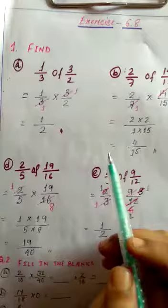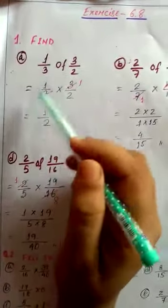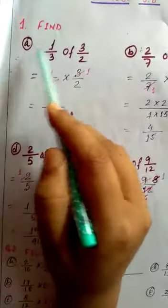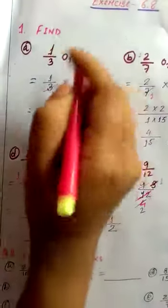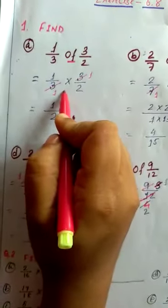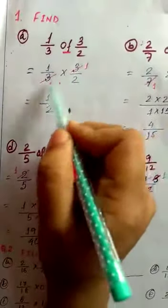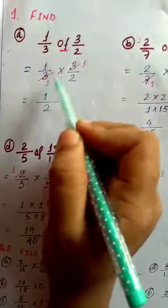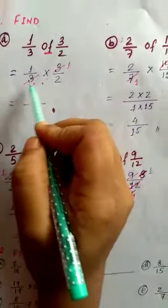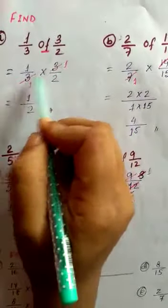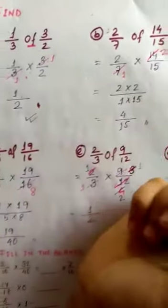Now let's do the exercise questions. Question 1a: find 1/3 of 3/2. Here 'of' means we have to multiply, so 1/3 × 3/2. We can cancel the 3 in the numerator and the 3 in the denominator. What we get is 1/2. So the answer is one half.